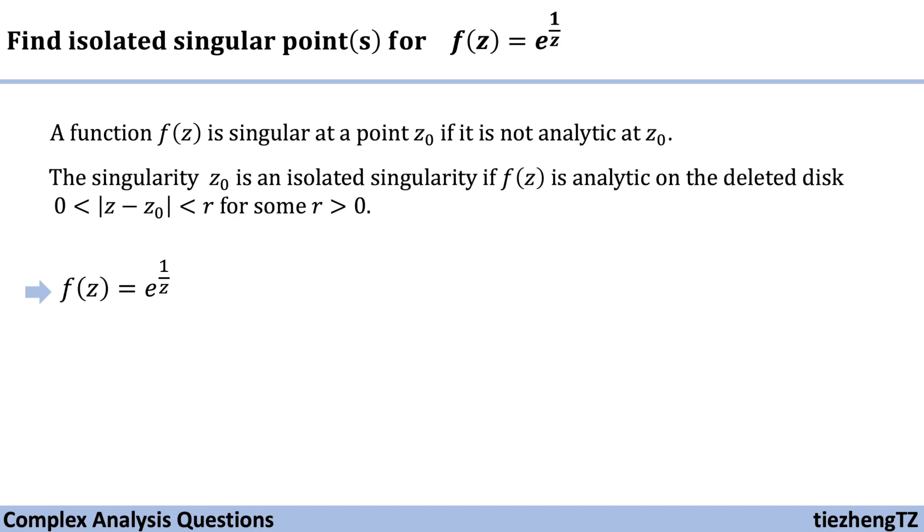And also, we can tell that on the deleted disk, when |z| is between 0 and r when r is some positive value, this function can still be analytic, right?